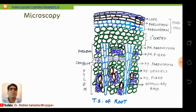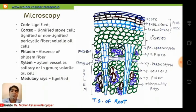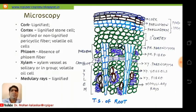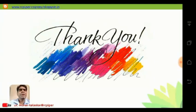Certain features make differences between different types of roots. In some cases, cork cells are lignified. In the cortex, modified cells may be present such as stone cells, or lignified or non-lignified pericyclic fibers, or volatile oil cells. In the phloem region, phloem fibers may or may not be present — the absence of phloem fibers is itself a special characteristic of a particular drug. In the xylem, vessels may be present in groups or as solitary individuals, and medullary rays may be lignified or non-lignified. Thank you for patient listening; please subscribe for future notifications.